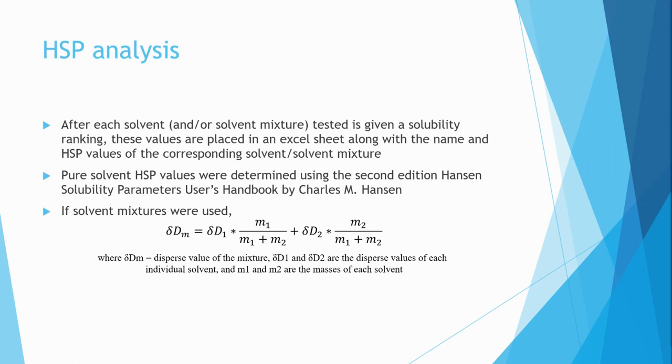After giving each solvent a solubility ranking corresponding to the chemical in question, these values were placed in an Excel sheet along with the name and HSP values of the corresponding solvent or solvent mixture. Again, the HSP values were determined using the second edition of Hansen's Solubility Parameters User's Handbook by Charles M. Hansen.